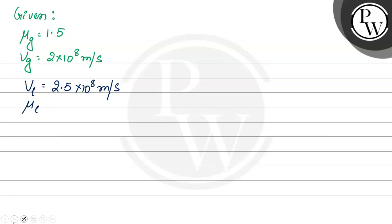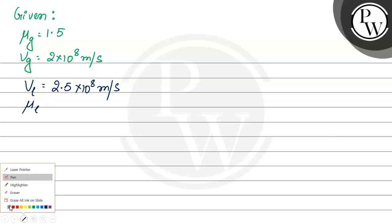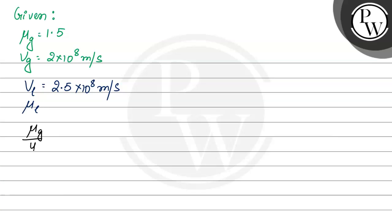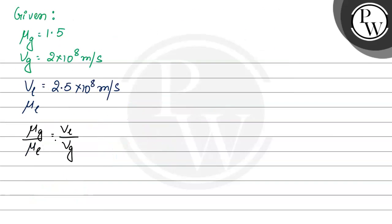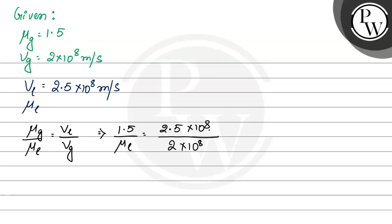So, mu g by mu l will be equal to vl by vg, because we established that mu 1 by mu 2 is equal to v2 by v1. Substituting: 1.5 divided by mu l is equal to 2.5 into 10 to the power 8 divided by 2 into 10 to the power 8. The 10 to the power 8 terms cancel out.